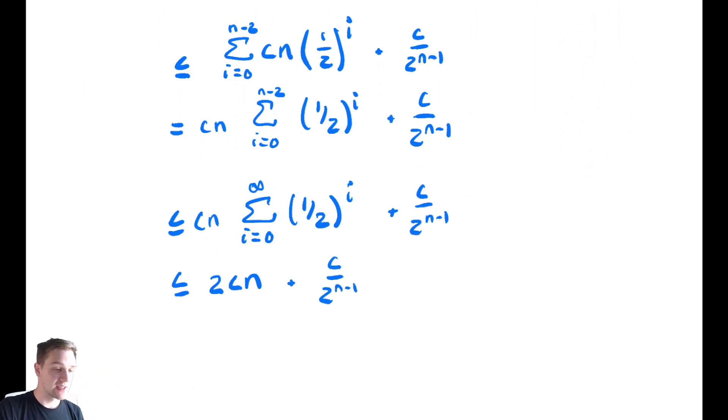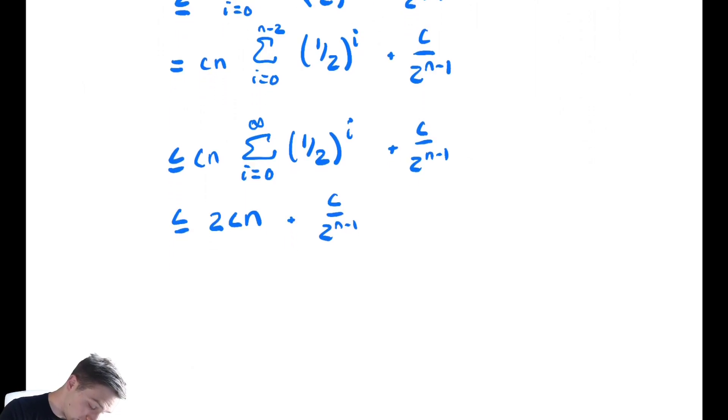And then plus this other weird term. This other weird term is just less than or equal to a constant. So, it's not affecting our runtime. So, this is in big O of n.